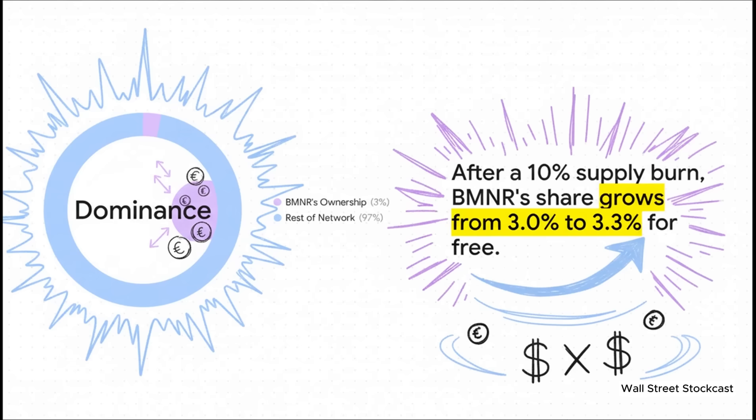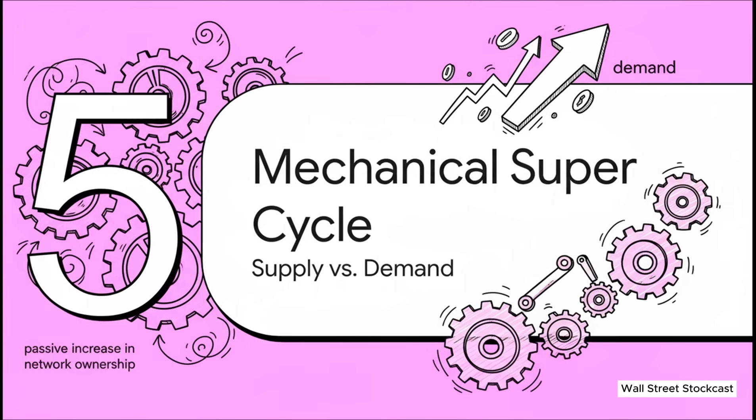And this is what the thesis calls the hidden dividend of deflation. It's not a dividend you get in the mail. It's a dividend paid in dominance. As the total supply of ETH shrinks, BMNR's fixed stash of it automatically becomes a bigger piece of the entire network. As you can see here, if the supply shrinks by 10%, their share of the network just grows from 3.0% to 3.3%. It happens passively, without them having to lift a finger.